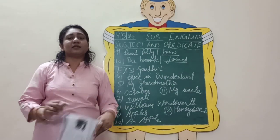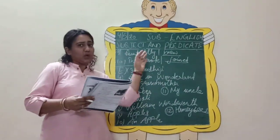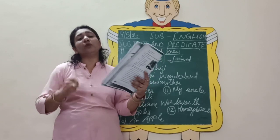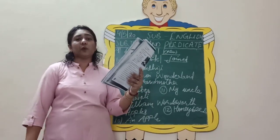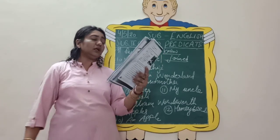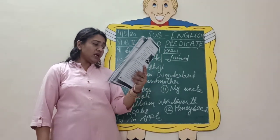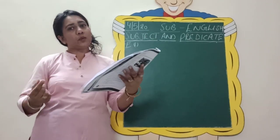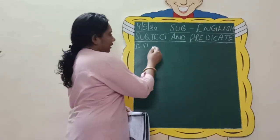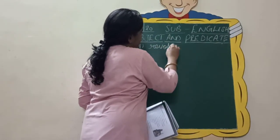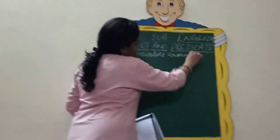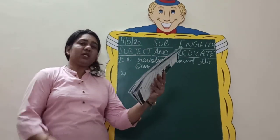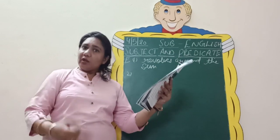I hope you have done this exercise and checked your answers. Now let's see Exercise F — you have to provide the predicates in the sentences, just as we did the subjects. For the first sentence: 'The earth' — we all know the earth revolves around the sun, so the predicate is 'revolves around the sun.' You can also write: 'the earth is blue in colour.' This is how you add your predicate.